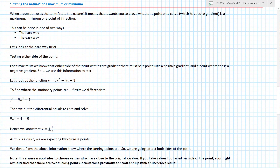Now the excitement starts: stating the nature of a maximum or minimum. In an exam, 'state the nature' is code for proving whether something is a maximum or a minimum — you can't just say 'I think it's a maximum,' you have to prove it. It can be done in one of two ways: the hard way and the easy way. We're going to look at the hard way first — if you want the easy way, fast forward, but there isn't a 37th minute anyway.